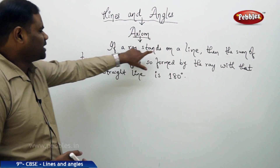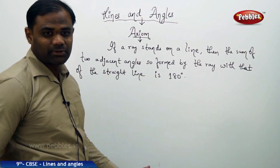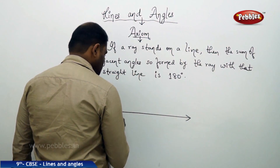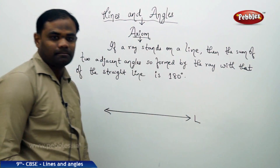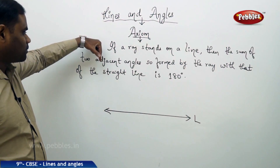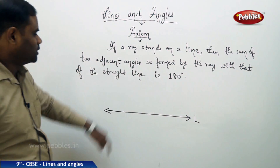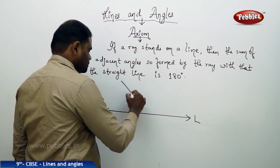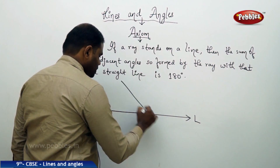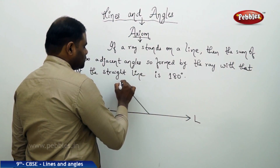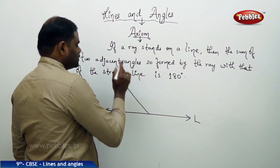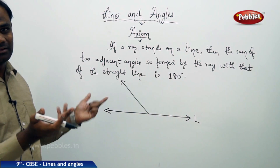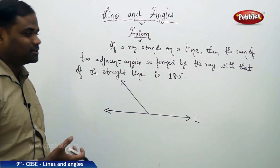The axiom says: if a ray stands on a line. So let me take a straight line — here is the straight line, say L. Imagine I project a light through a torch on this, so a ray of light hits here. If a ray stands on a line L, this is how it stands, at any angle, irrespective of 90 degrees.